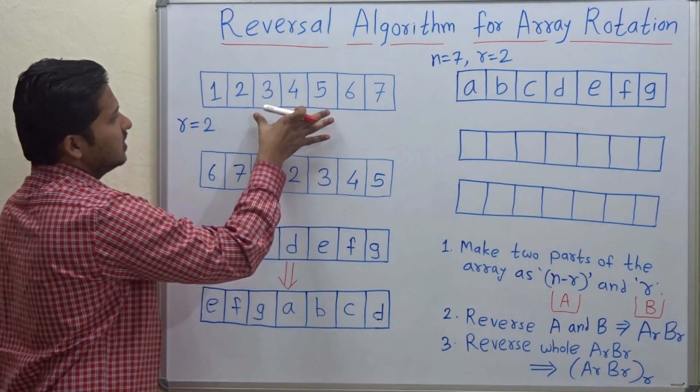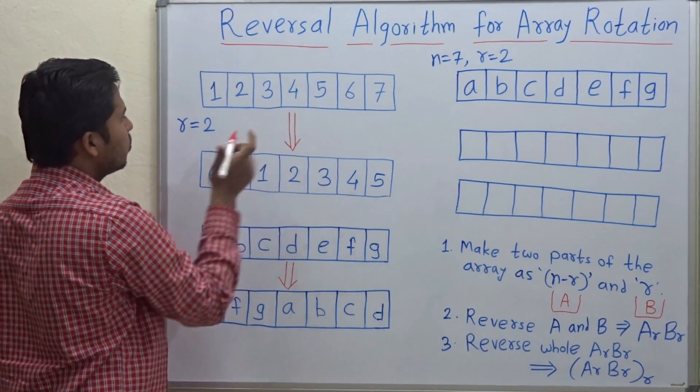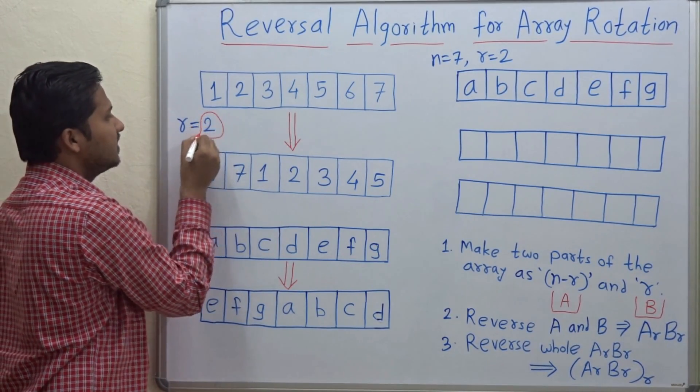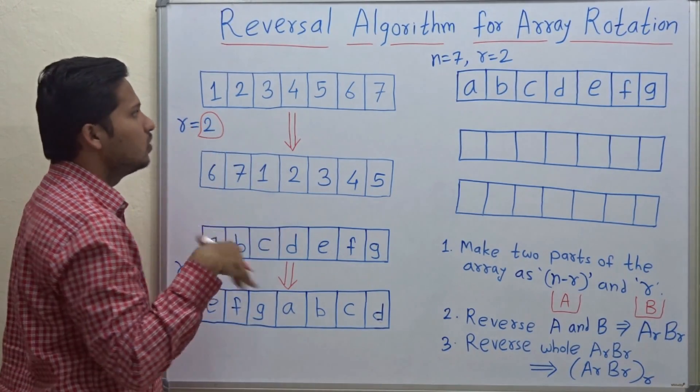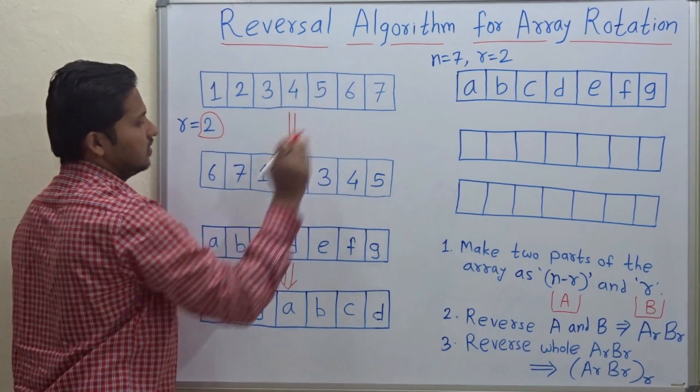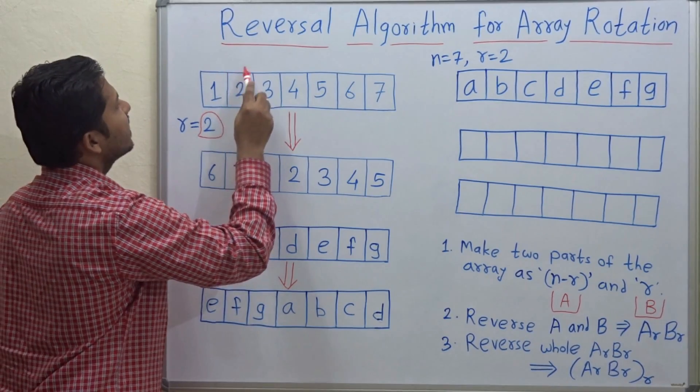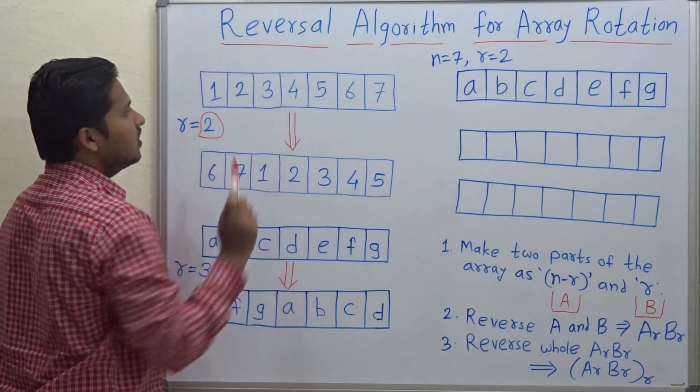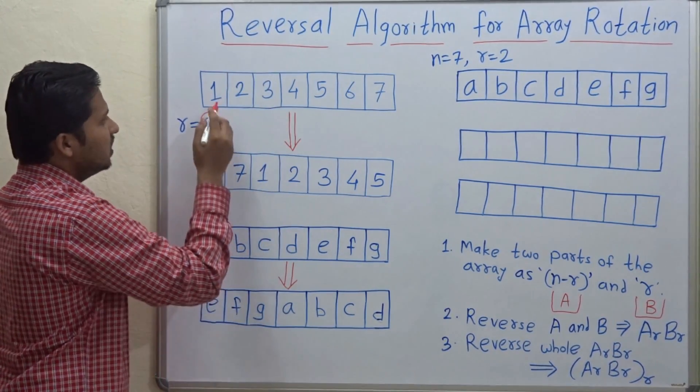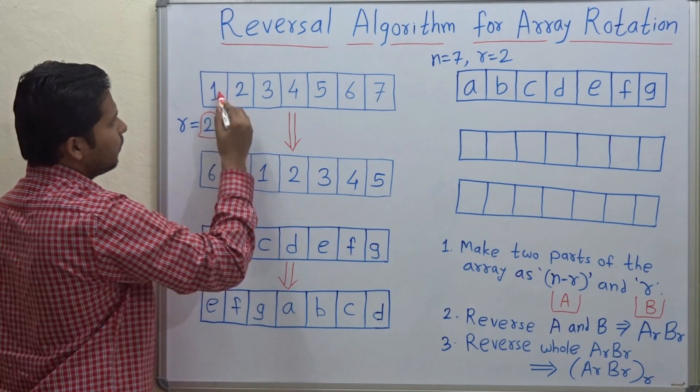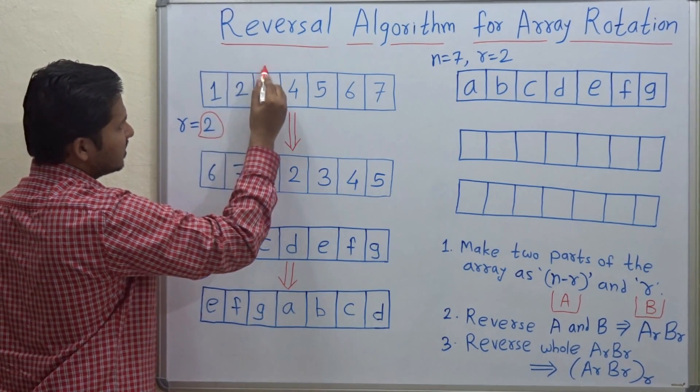So see, this is the array and we want to rotate this array by two places. Suppose we want to rotate to the right. That means we have to push every element of the array two places to the right.